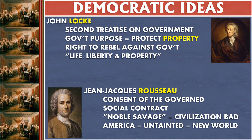John Locke wrote something called the Second Treatise on Government. He basically said government's purpose is to protect property, and if the government doesn't protect your personal property and doesn't protect the safety and security of people and property, you have a right to rebel against the government. He had a phrase in the Second Treatise — 'life, liberty, and property' — which later became a key phrase in the Declaration of Independence where Jefferson turned it into 'life, liberty, and the pursuit of happiness.'